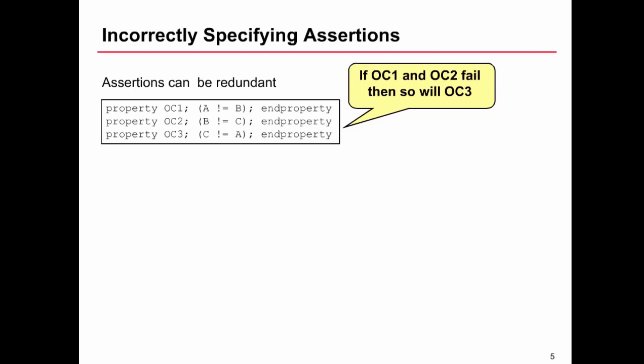Things to be wary of when you're describing properties is you might describe some assertions that are redundant. The three properties you can see here, OC1, OC2, OC3. Now, what the bubble point says here is that if OC1 and OC2 fail, then so will OC3. So this isn't the same thing as saying we could just delete OC3 because it's not telling us anything we wouldn't know otherwise.